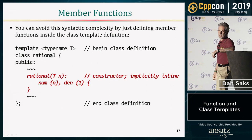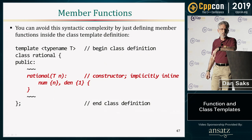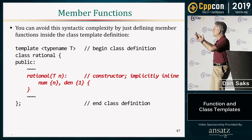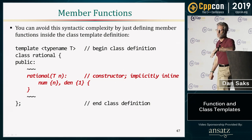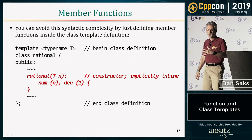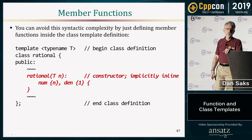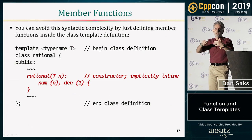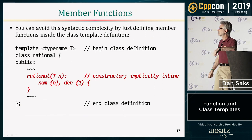Here's a way to simplify things: write the member function definitions right there inside the class definition. A lot of the syntactic complexity disappears — they look just like member function definitions in non-templated classes. They also acquire the implicit inline property when you do that. Many people gravitate to this approach because it eliminates the overhead of repeating 'template <typename T>' in order to glue things together.